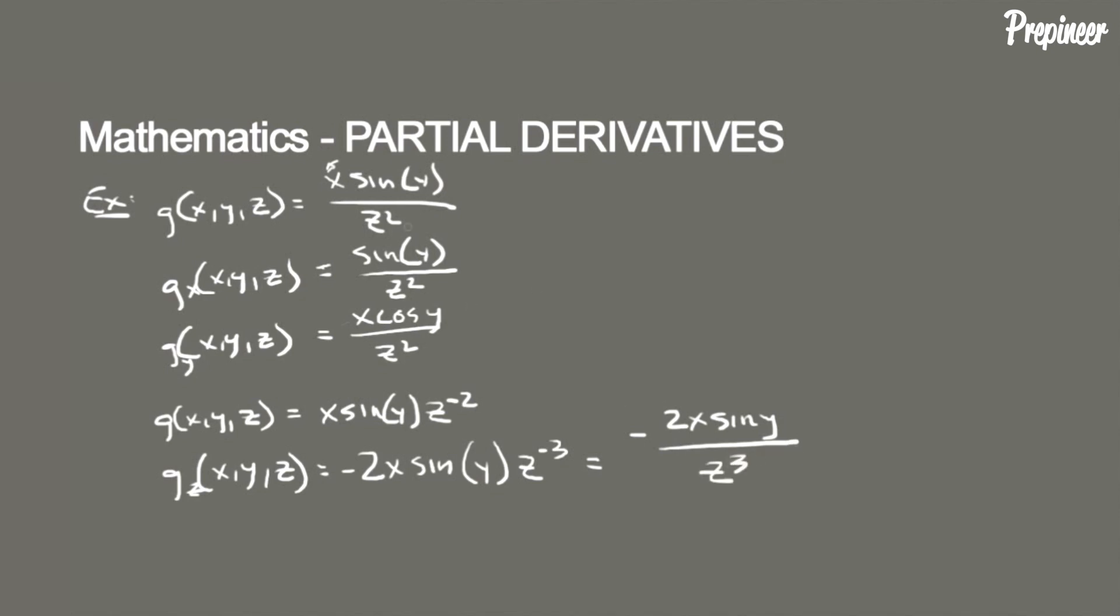So that's it. It's not much harder. You just continue to hold the variables that you aren't differentiating as constants and just differentiate the ones that you are looking for.